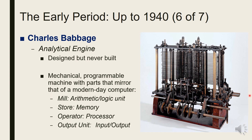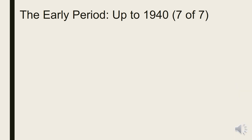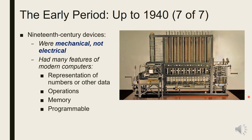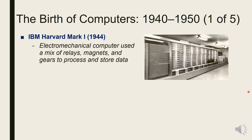The Analytical Engine included: the Mill for the ALU or arithmetic logic unit, the Store for memory, the operator for the processor, and the output unit for input and output. 19th century devices were mechanical but not electrical, and had many features in common with our modern computer — like representation of numbers or other data, operations to manipulate the data, memory to store values in a machine-readable form, and programmable sequences of instructions pre-designed for complex operations.